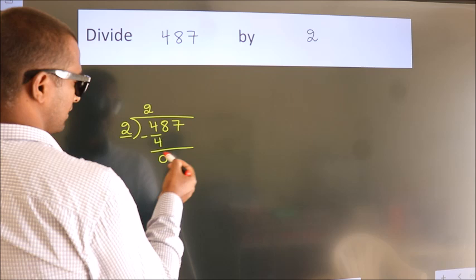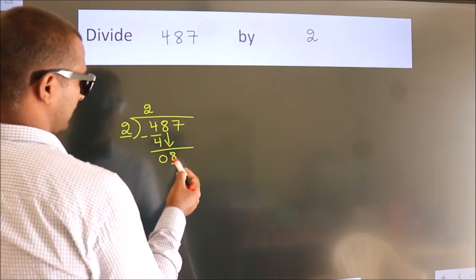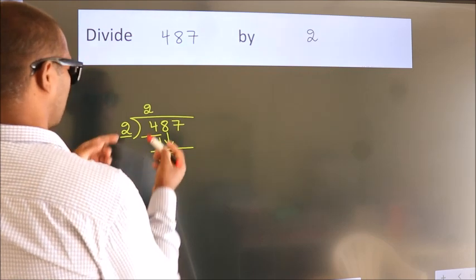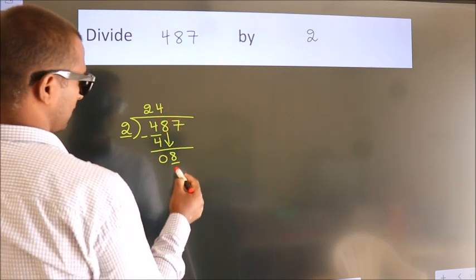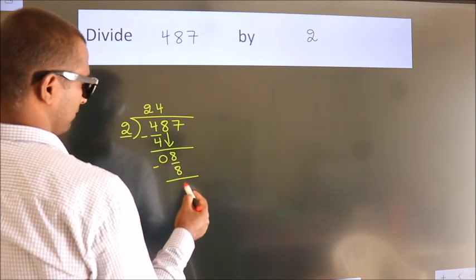After this, bring down the beside number. So, 8 down. So, 8. When do we get 8? In 2 table. 2 4's, 8. Now, we subtract. We get 0.